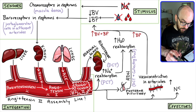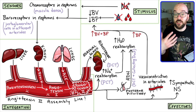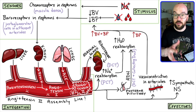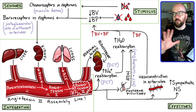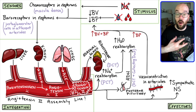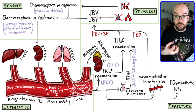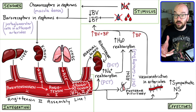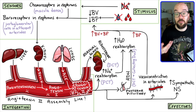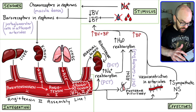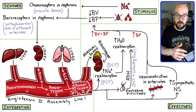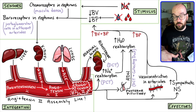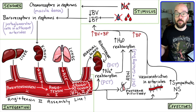Angiotensin II also targets the brain and causes an increase in your sympathetic nervous system — your fight or flight response. This causes things like your heart beating faster and harder, you becoming more alert and aware, and a bunch of other changes that all cause an increase in blood pressure, circling back to raise blood pressure back up to where it should be.